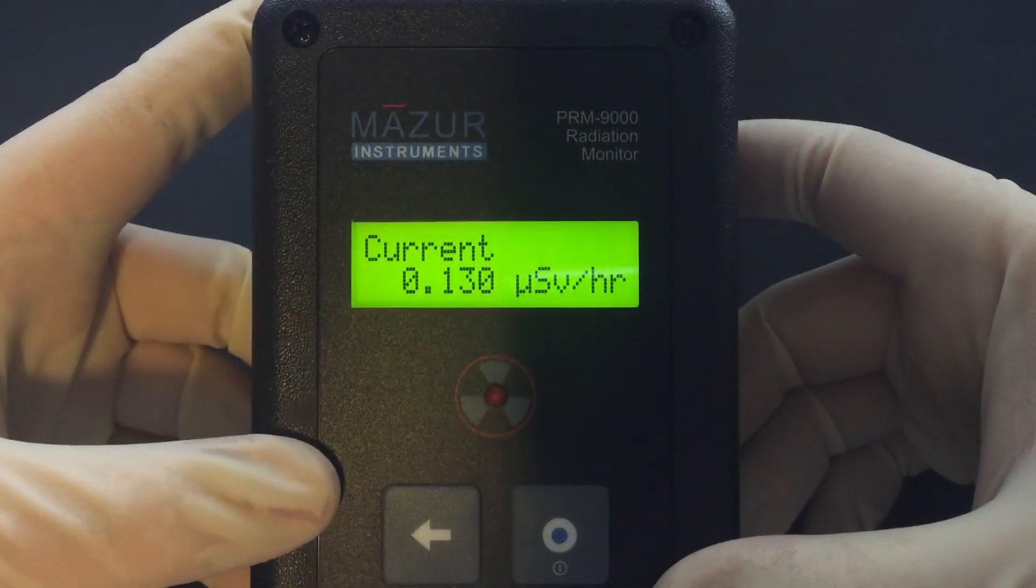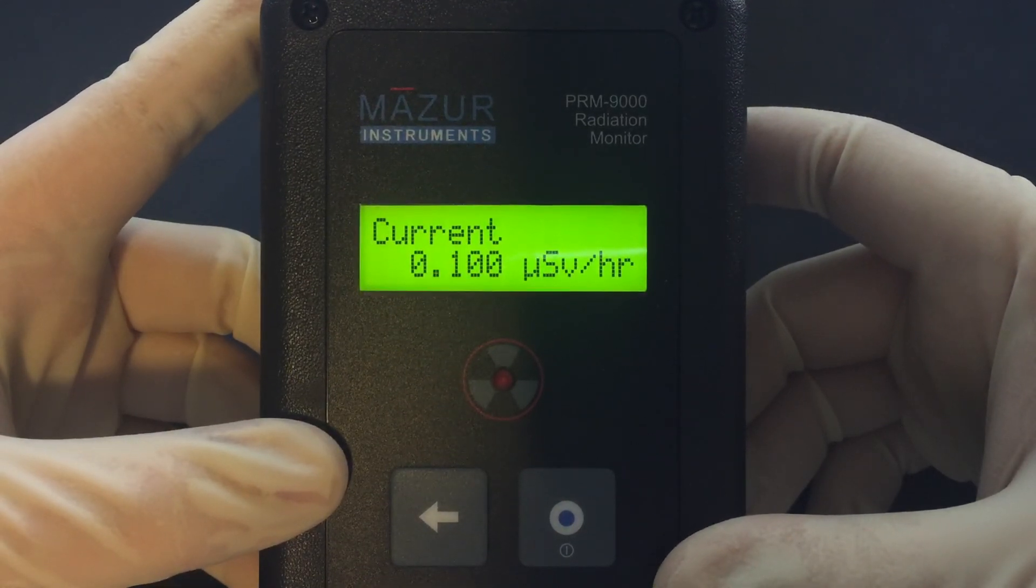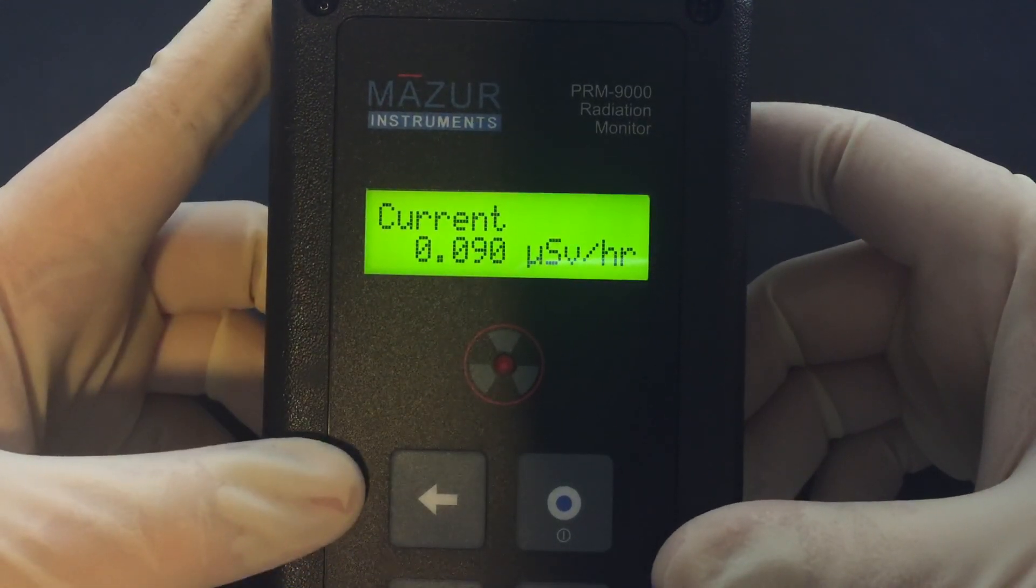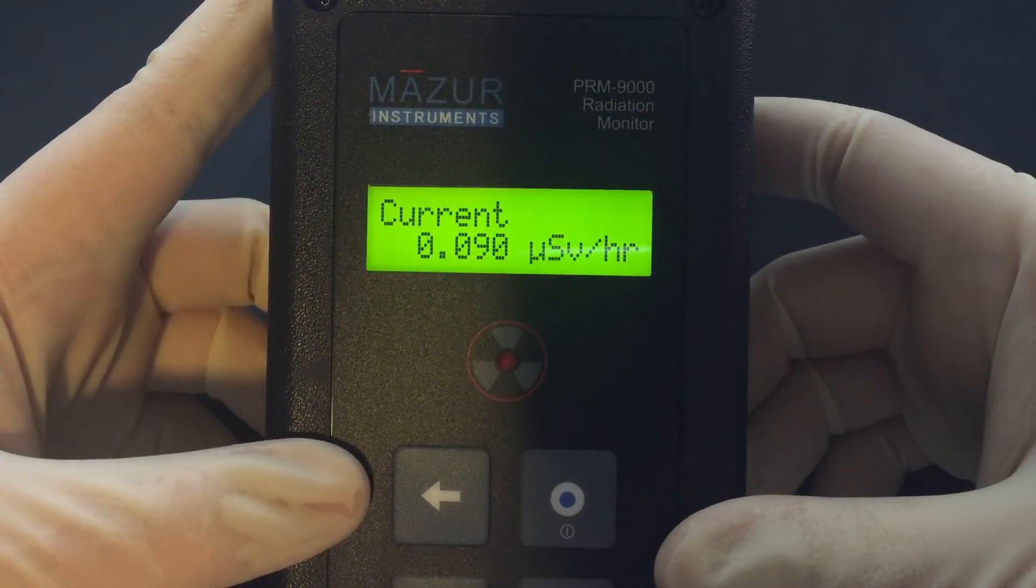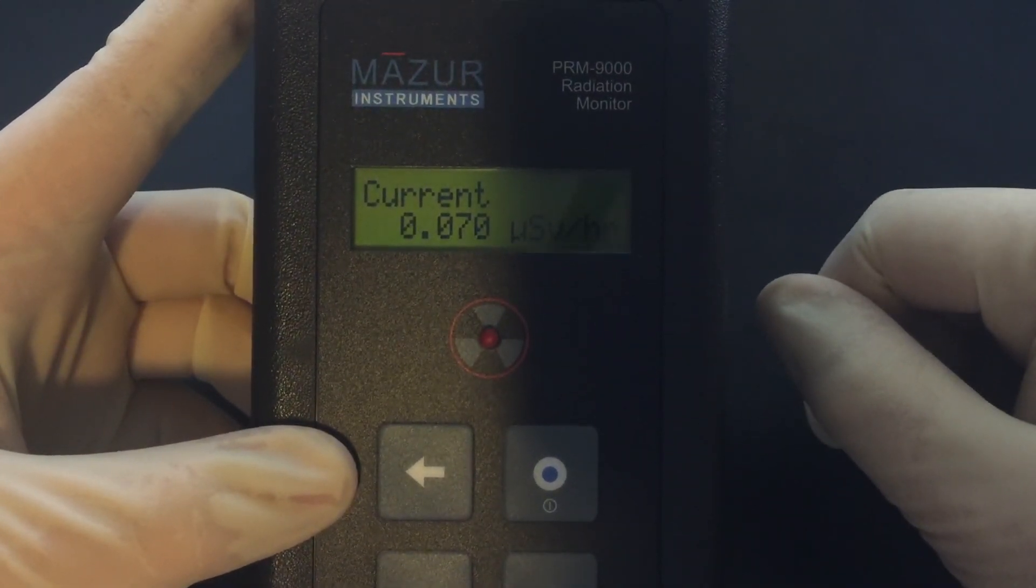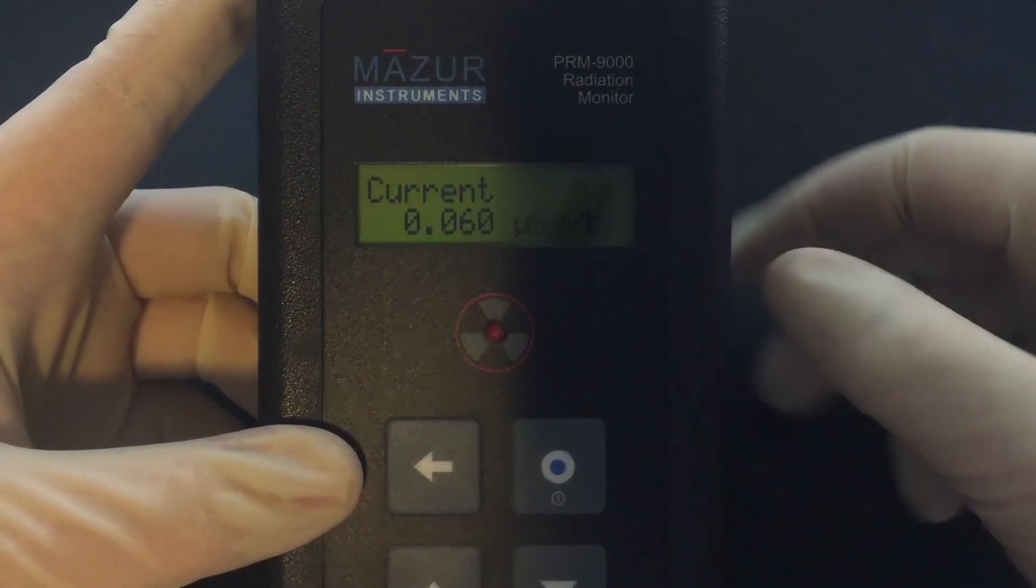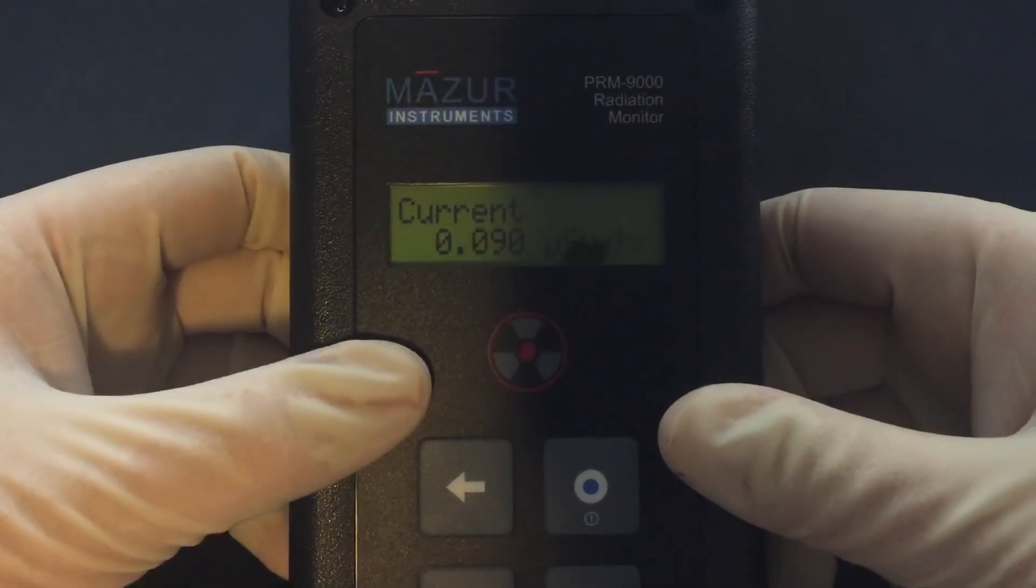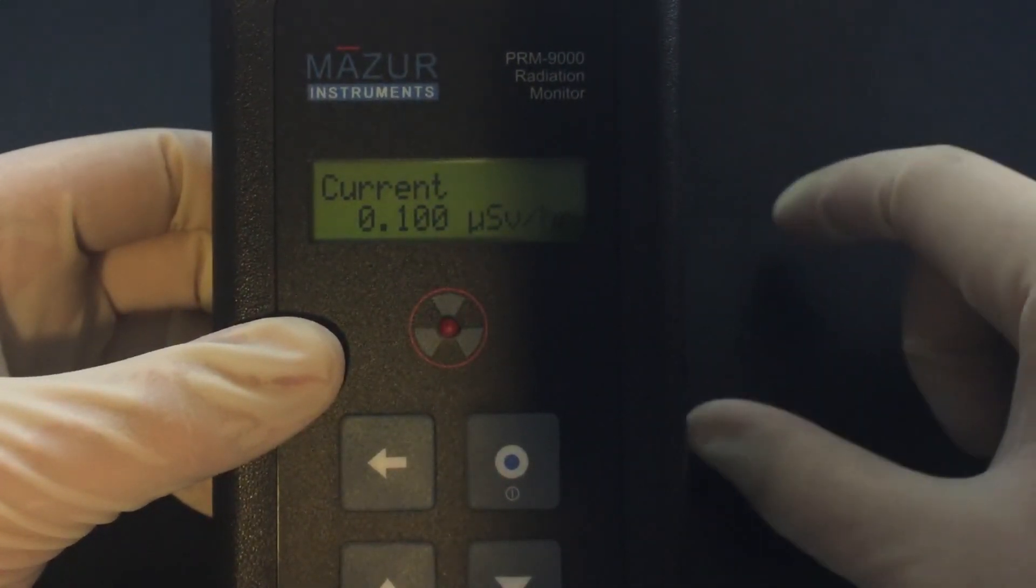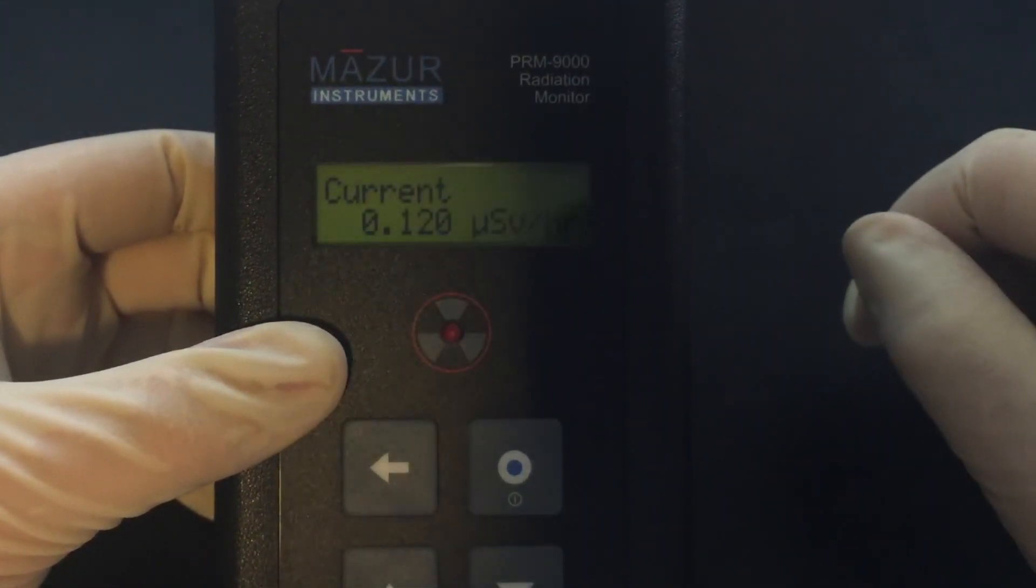that's the Mazur PRM 9000 versus 10 microcuries of cesium-137. You know, it overflowed—not unusual—but you can see it went well over a millisievert before it did. Anyway, I thought you'd find this interesting, a quick little demo of the inverse square law, showing you that just a small distance away makes a dramatic difference in the dose rate.